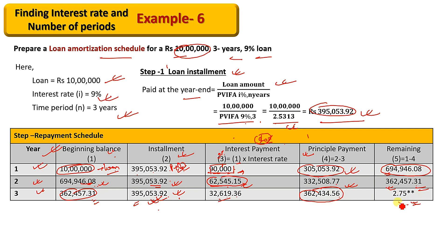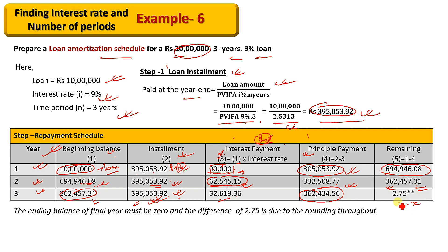The ending balance of the final year must be zero. Any difference, such as $2.75, is due to rounding error. If you have any questions, please like, comment, share, and subscribe. Thank you.